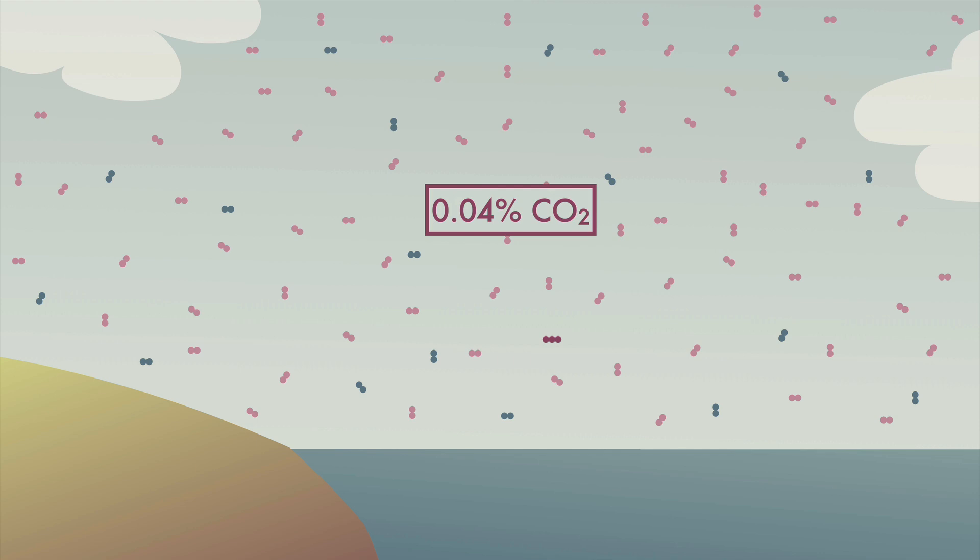Atmospheric carbon dioxide comes largely from the respiration of plants and animals, as well as when they decompose, and also from the burning of fossil fuels.